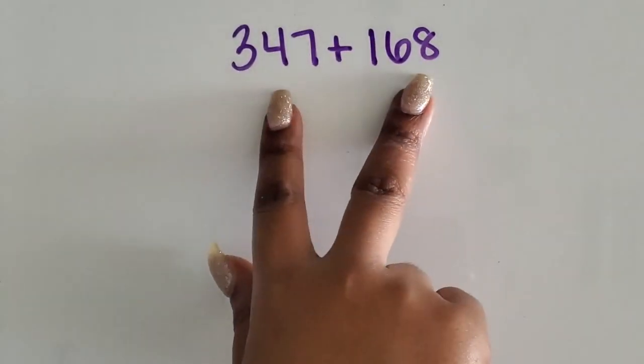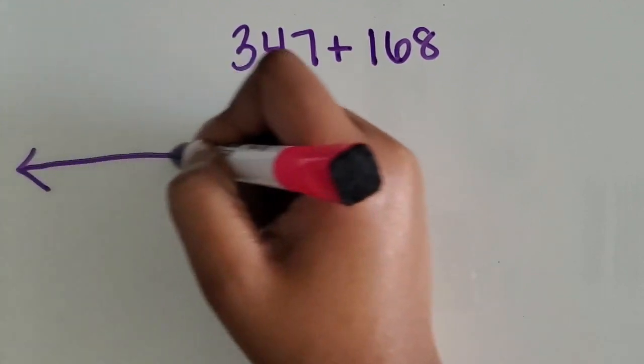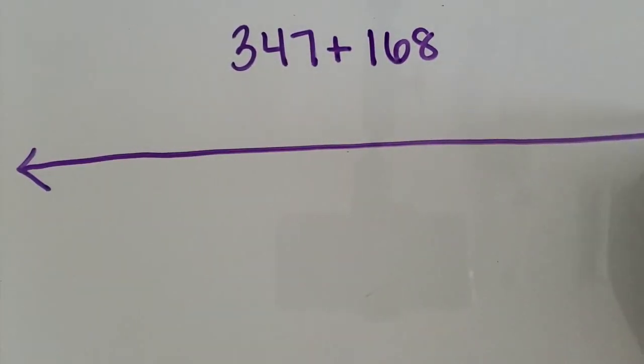We are going to add two three-digit numbers using an open number line. There are multiple ways that you can use the open number line to add your two numbers. I'm going to show you a few.